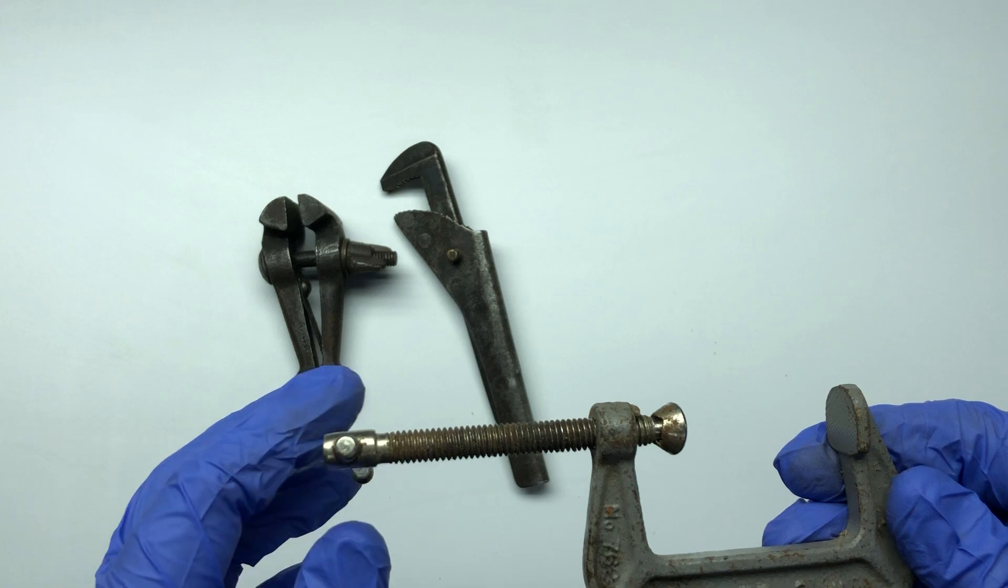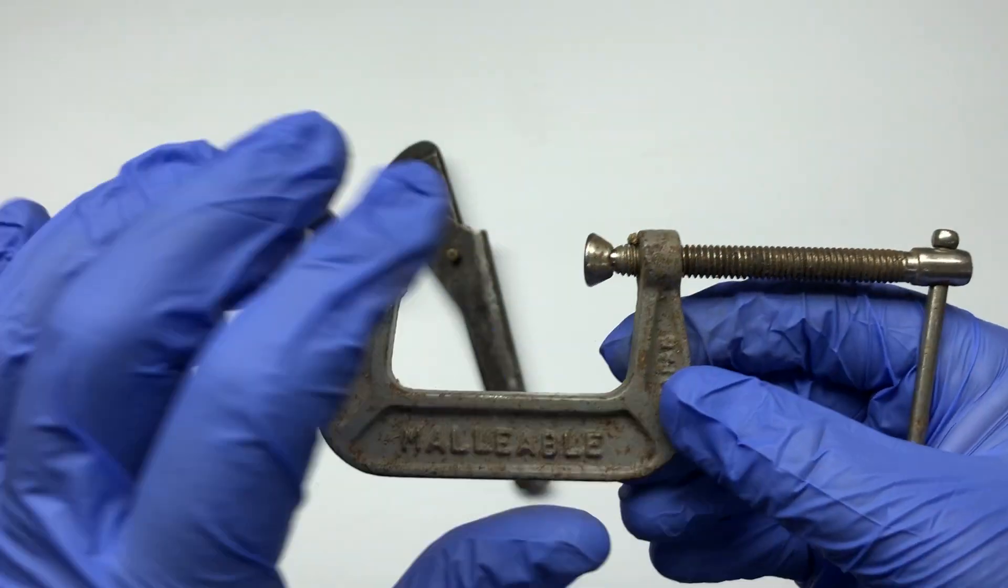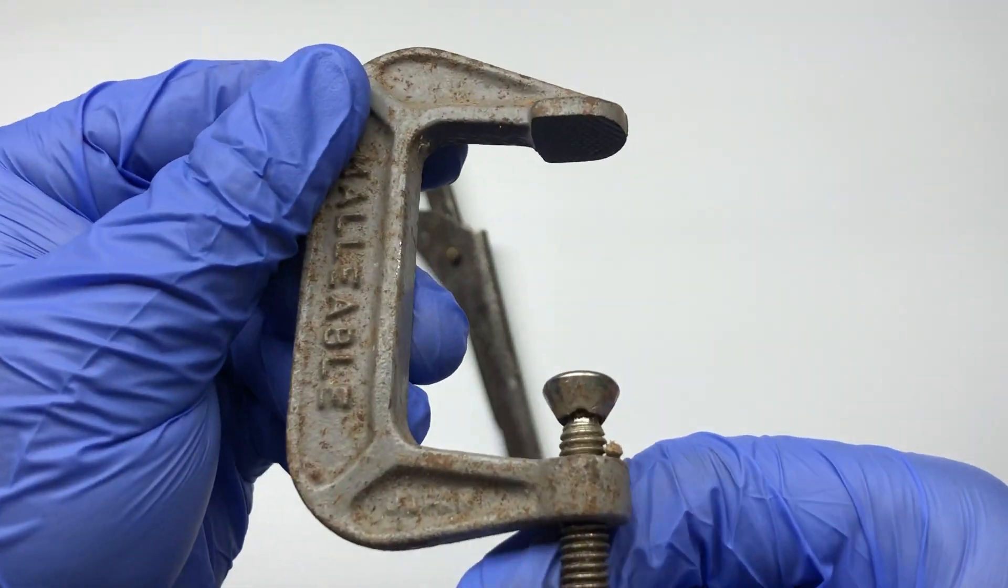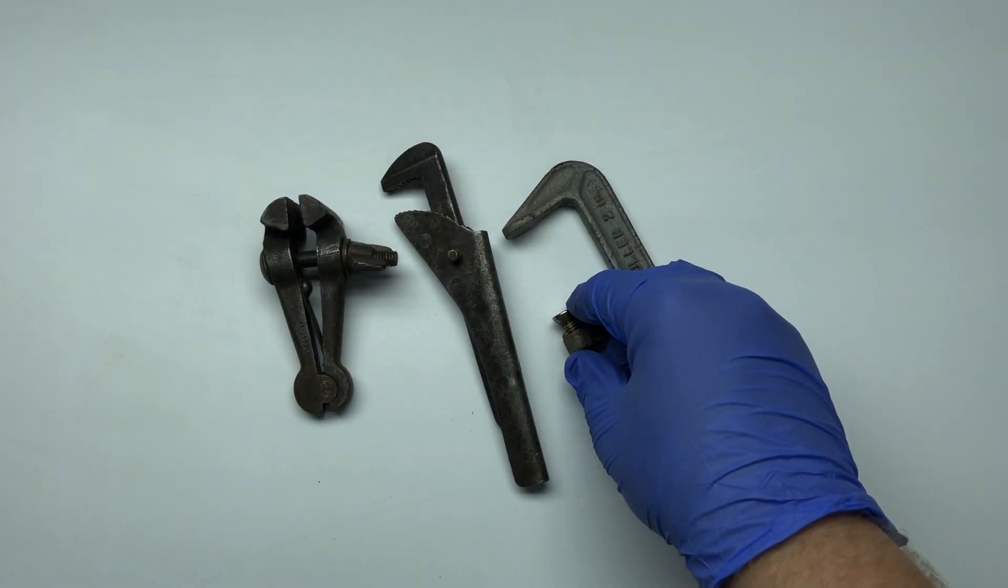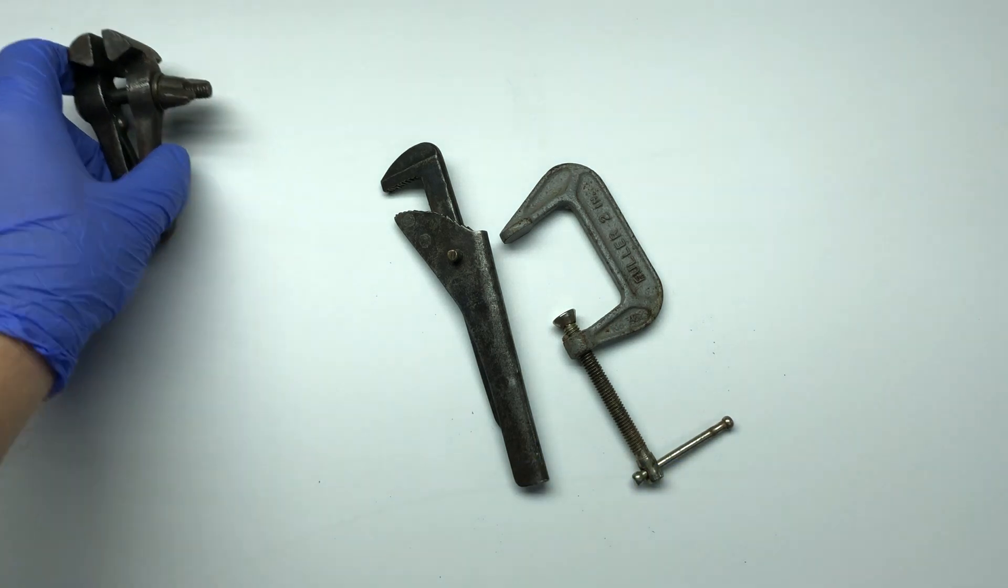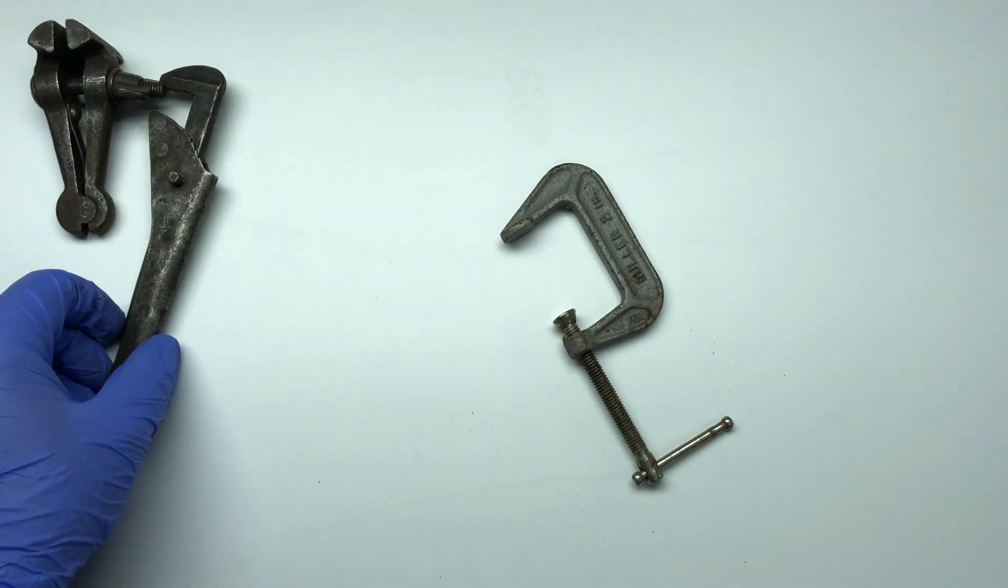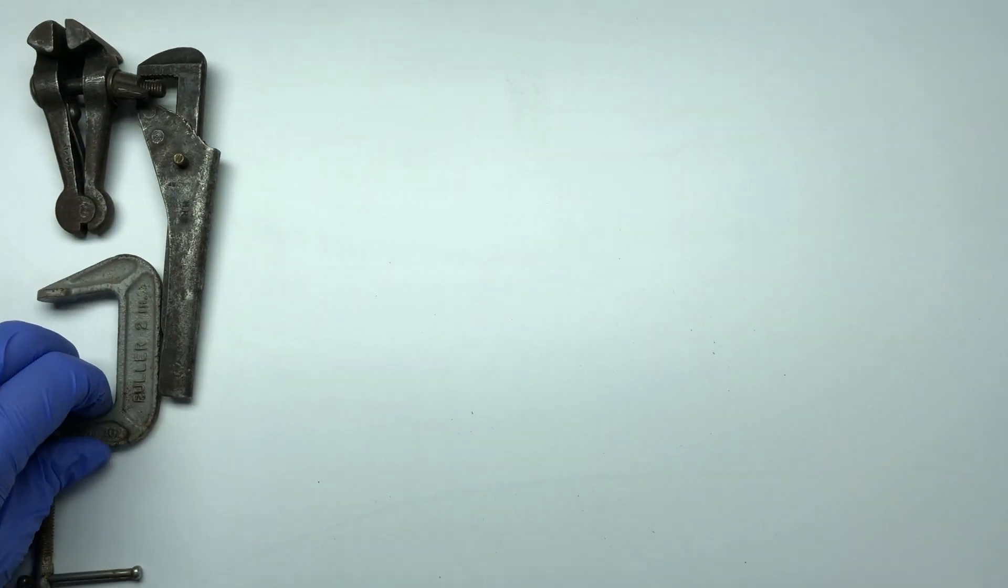And I bought this little 2 inch fuller clamp made in Japan. So the first lot was £1.50 for the three items. So three items for £1.50. So I thought that was fun, £1.50. So I'll put them aside.